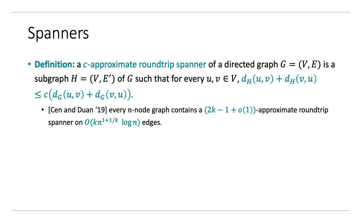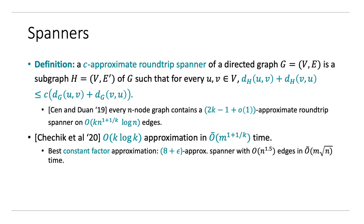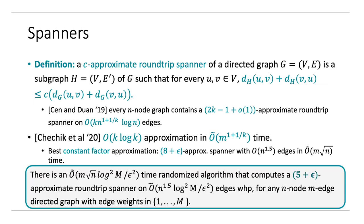This is an existence result — we are interested in finding such spanners in short time, which hasn't been studied much. Cechik et al. showed that one can find a K log K approximate round-trip spanner in M to the 1 plus 1 over K time. The best constant factor that result gives is an 8 plus epsilon approximate spanner with N to the 1.5 edges in M root N time. We improved the approximation factor and give a 5 plus epsilon approximate round-trip spanner in the same time and number of edges, roughly.